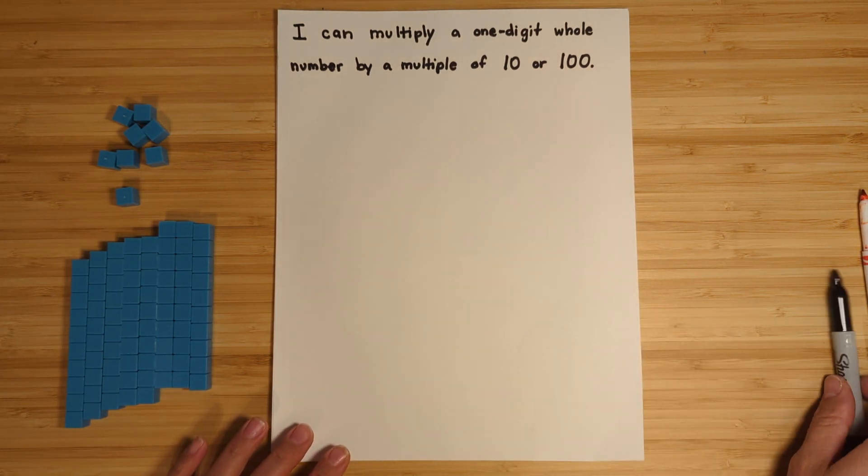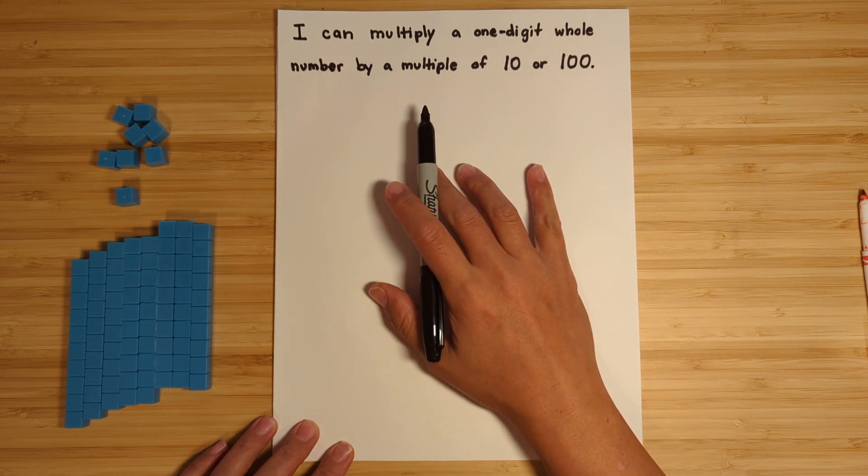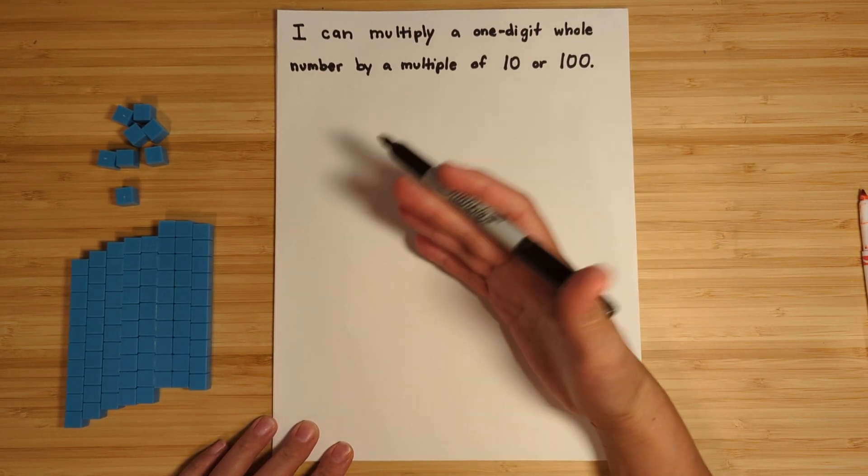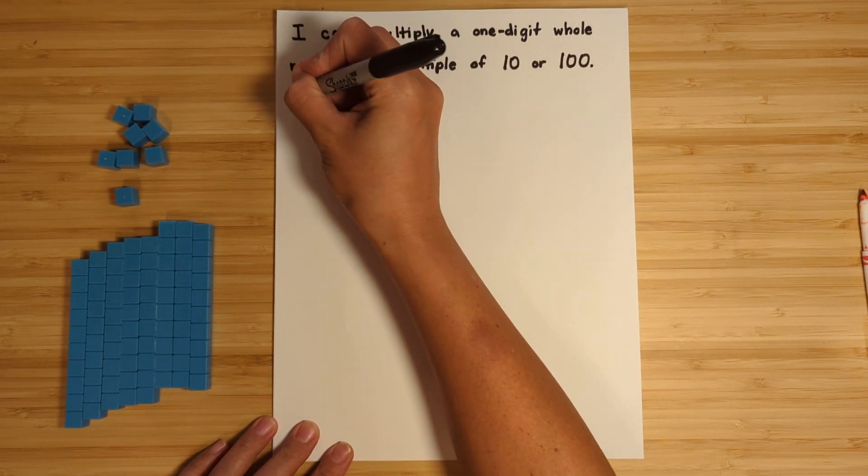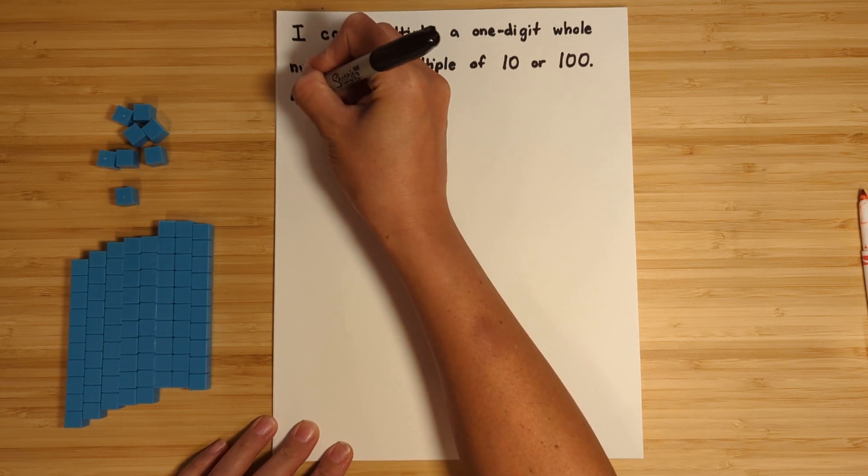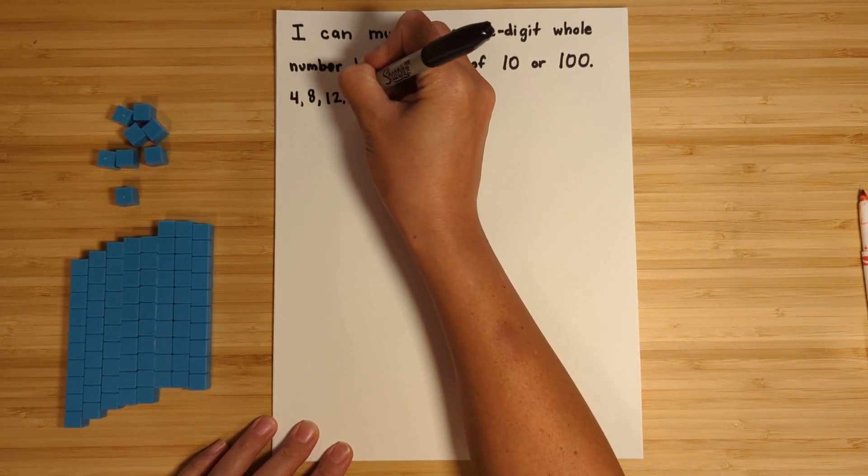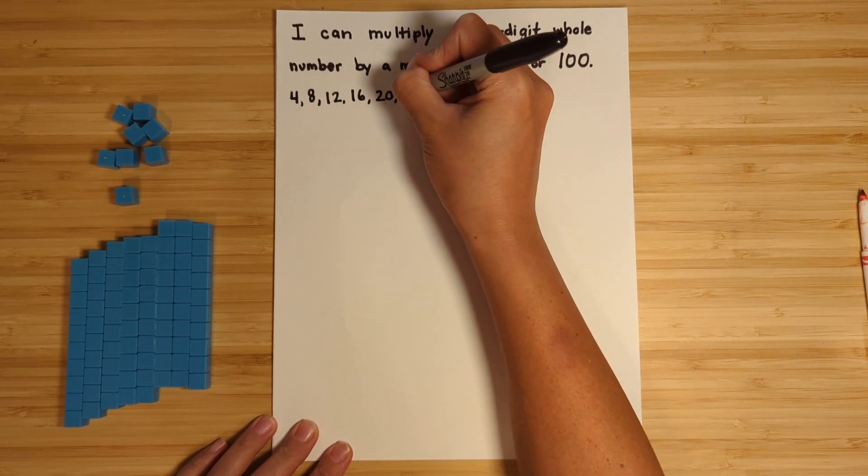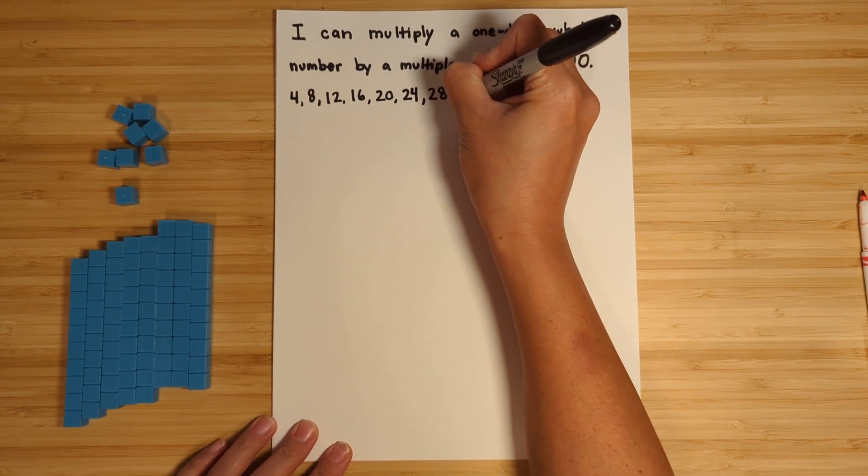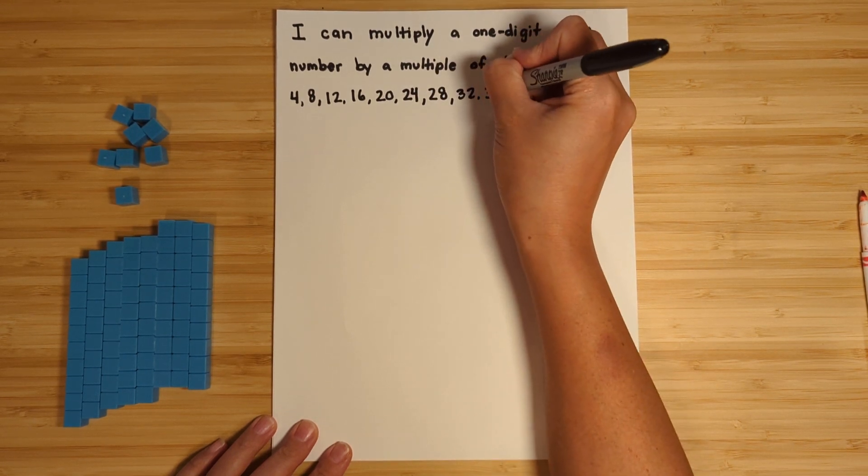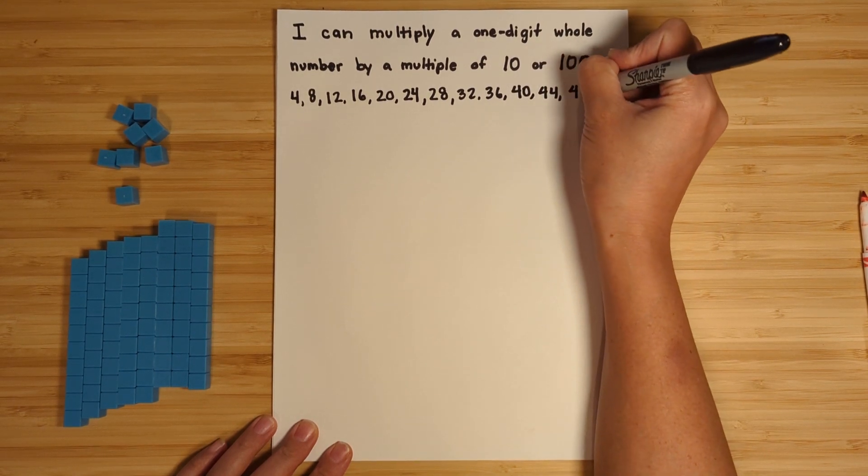Okay, so before we get started, it's really important that you should have your basic facts memorized, and if you don't, that you can skip count. So we're going to be working with four, so let's just go over skip counting by four: 4, 8, 12, 16, 20, 24, 28, 32, 36, 40, 44, and 48. Okay, so that's just for us to reference.